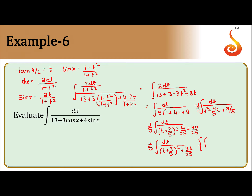This is now in the standard form ∫dx/(x² + a²) = (1/a)tan⁻¹(x/a) + C. Applying this, where a² = 36/25 so a = 6/5, we get (1/5)·(1/(6/5))·tan⁻¹[(t + 2/5)/(6/5)].